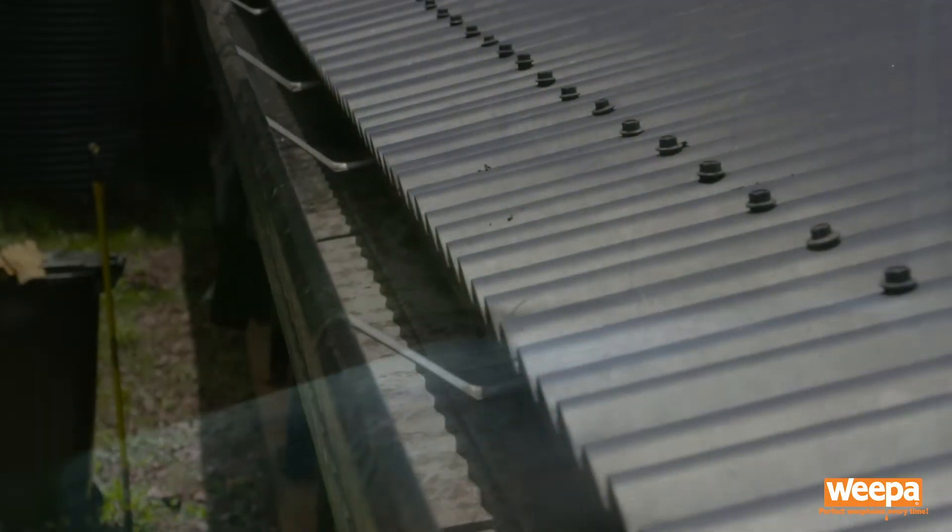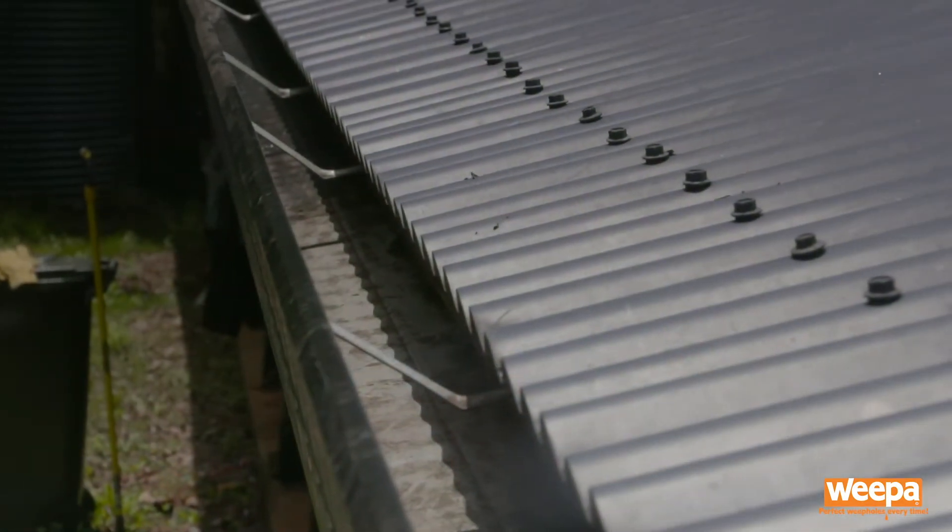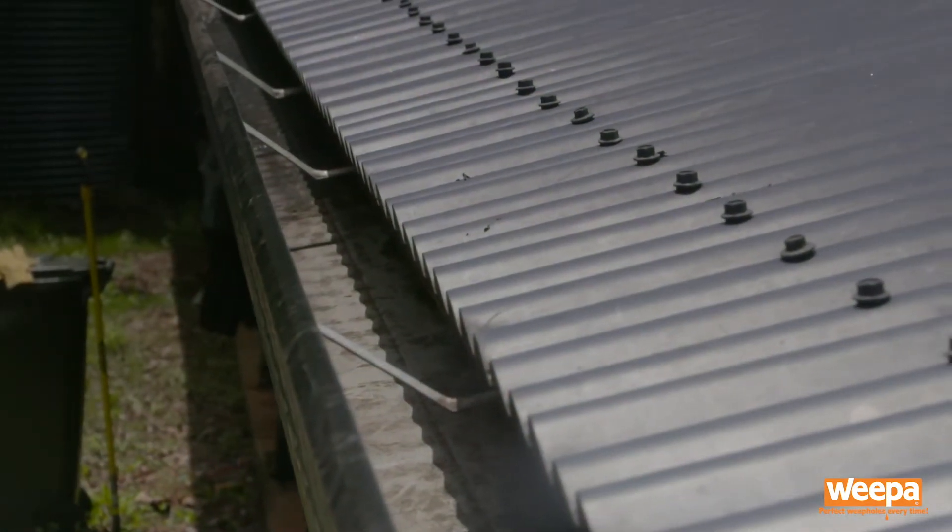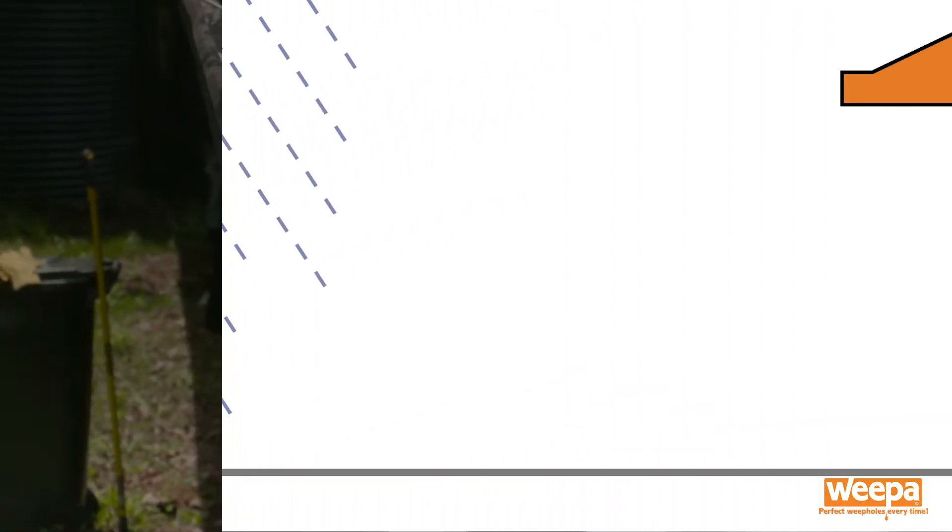When water enters this space due to leaking roofs, faulty gutters or any other type of accidental flooding, the weep holes act as a drain, allowing water to escape to the outside of the building rather than through the internal walls.